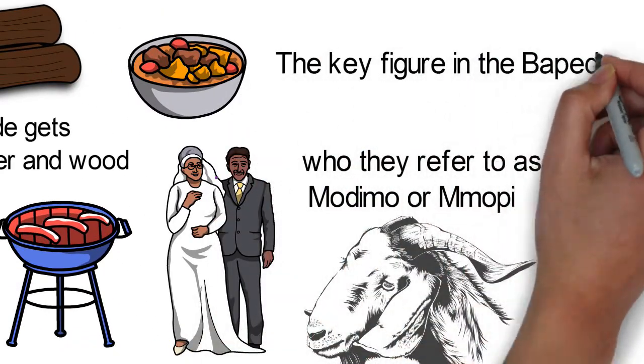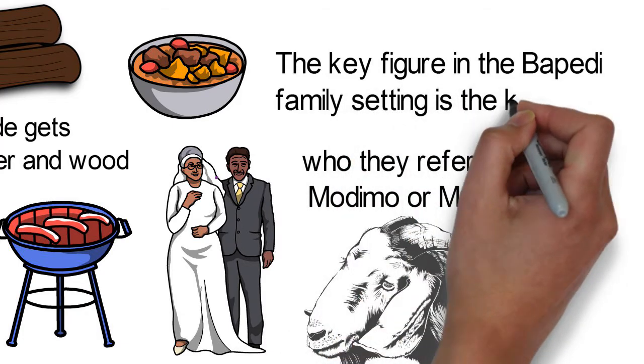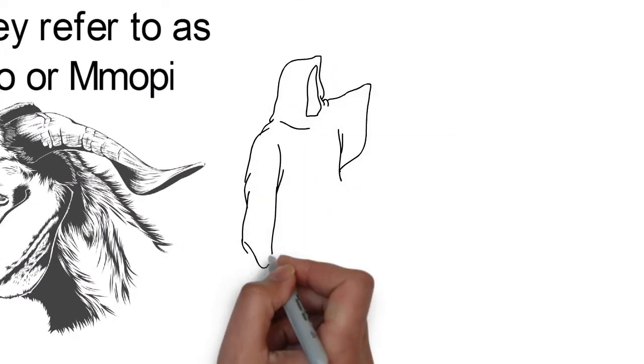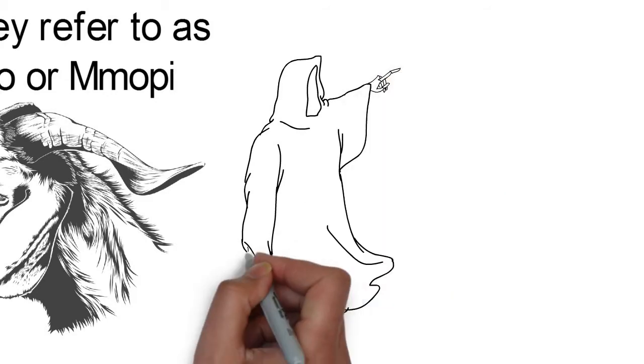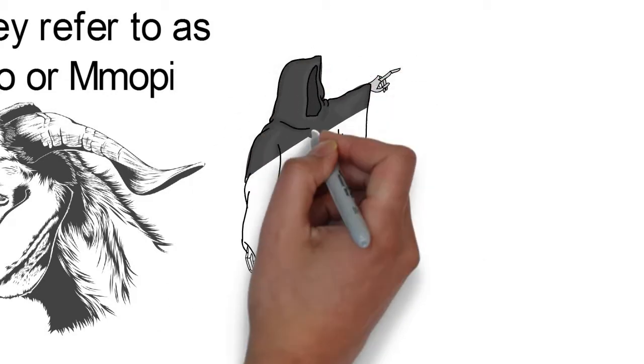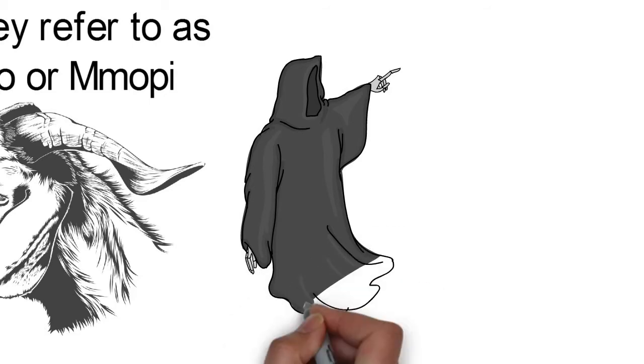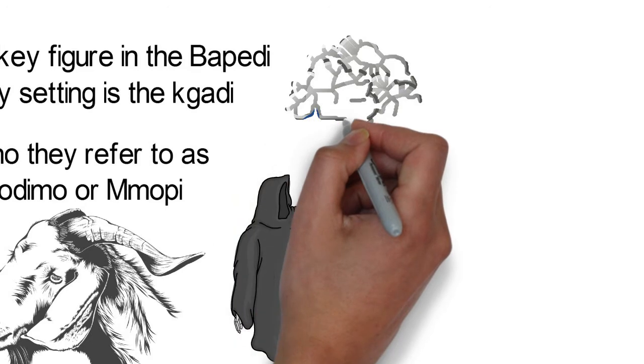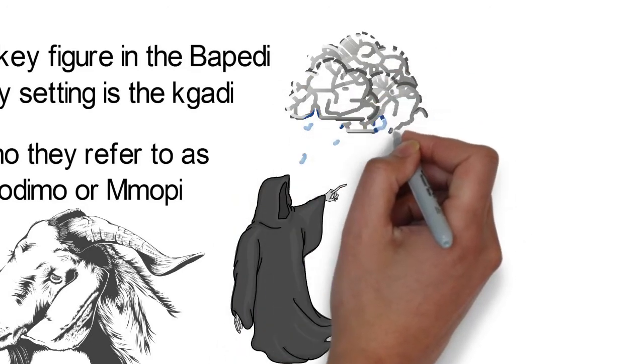The key figure in the Bapedi family setting is the Gadi, the elder sister of a home's male head. She performs rituals on behalf of the family and acts as Ngaka, a diviner. This position used to be patrilineal, but is now inherited by women.